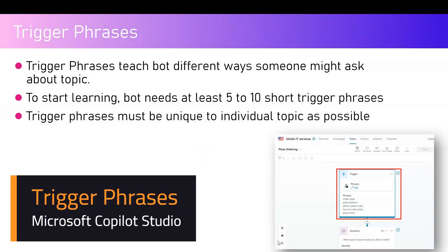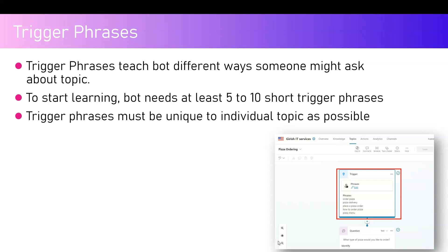In this video I'm going to talk about trigger phrases within Copilot Studio. When you build a copilot, the first thing you're going to do is start building a topic. Once you start building a topic, the topic needs something to trigger it — that's where trigger phrases come in handy. Trigger phrases basically teach the bot different ways someone might ask about a topic. For example, if you want to trigger a pizza ordering topic, you can specify 'order pizza,' 'pizza delivery,' or 'place a pizza order.'